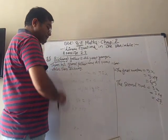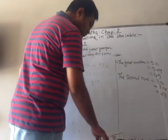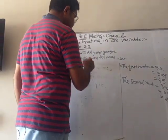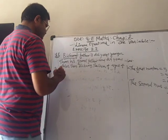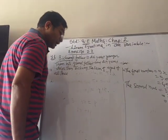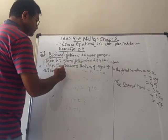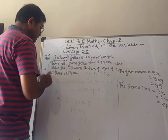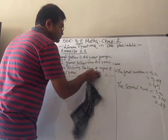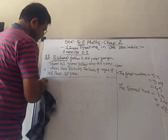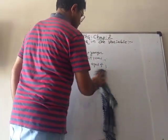Baichung's father is 29 years older than Baichung. Also given that the sum of ages of all three is 135 years. We have to find the ages of all three people: Baichung, his father, and his grandfather.